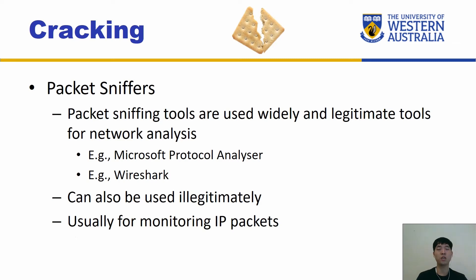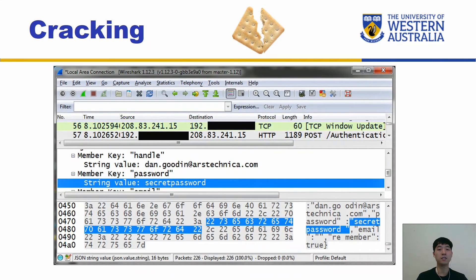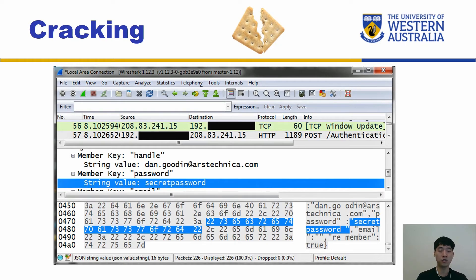But those tools can also be used illegitimately — usually for monitoring IP packets. If protocols are not implemented properly, it's going to reveal sensitive information. For example, here it shows 'password is secret password' — which is a very bad password to begin with. That's pretty much what cracking is: using tools to try to guess sensitive information, and a lot of it relates to passwords.